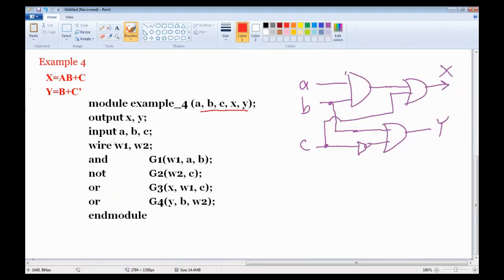Here is another example with two functions. A, B, C are declared as inputs. X, Y as outputs. Now we have two wires, wire 1 and 2 are declared. Next we AND A and B to wire 1, complement C into wire 2, OR C with wire 1 into X, and OR B with wire 2 into Y.